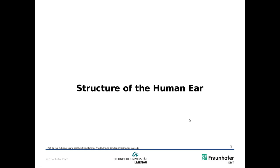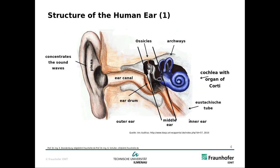First, the structure of the human ear. Here you can see the inner structure. Here's the outer ear, the pinna, and the sound comes in through the ear canal. Then we have the eardrum, which vibrates with the incoming sound.